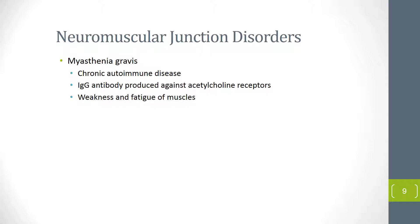The acetylcholinesterase test uses Tensilon, a drug that inhibits acetylcholinesterase, which is also used for treatment. When Tensilon is given to the patient, symptoms rapidly decrease and the patient improves dramatically. A positive Tensilon test is diagnostic for myasthenia gravis.